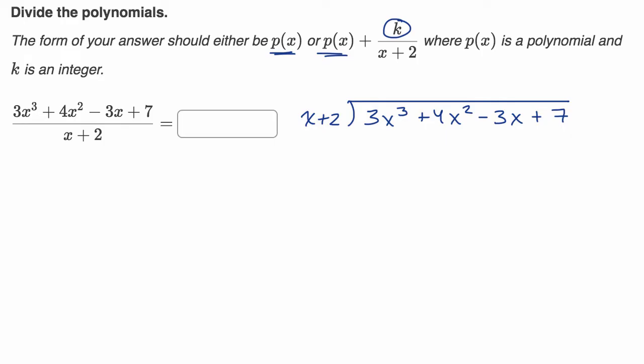And so, like always, we focus on the highest degree terms first. X goes into 3x³ how many times? Three x squared times. We'd want to put that in the second degree column, 3x². Three x squared times two is 6x². Three x squared times x is 3x³.